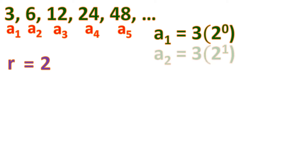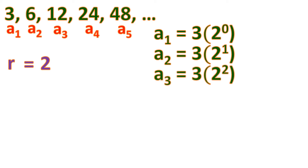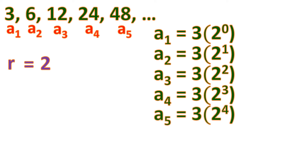For the second term, it is 3 times 2, which is 6, or written as 3 times 2 to the power of 1. For the third term, it is 3 times 2 times 2, which equals 3 times 2 squared. The fourth term is 3 times 2 cubed, or 2 to the power of 3. And the fifth term is 3 times 2 to the power of 4.